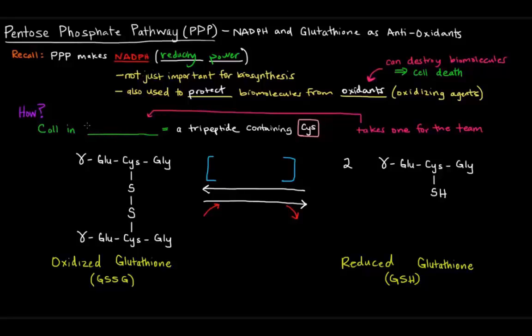Well, you call in this dude called glutathione. So glutathione, of course, by dude, I mean a molecule. Glutathione is a tripeptide containing cysteine. So, tripeptide means it's made up of three amino acids, tri meaning three.